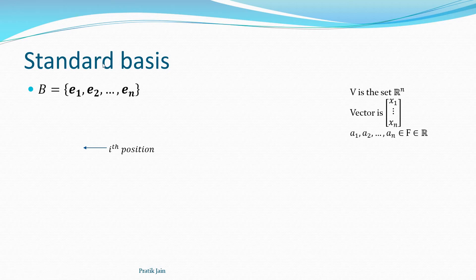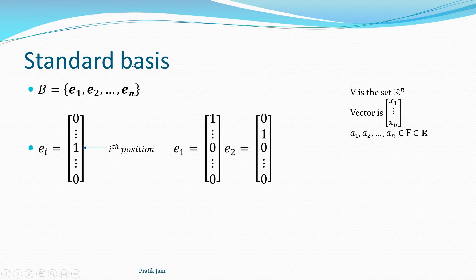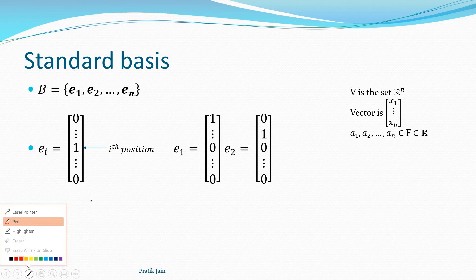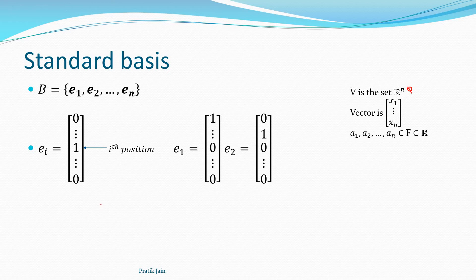Now there is something known as the standard basis — this is something we have learned since childhood. If you have vector space R^n, an n-tuple, and you have some basis e1, e2 up till en, the standard bases are defined by putting one on the i-th position. So e1 is (1, 0, 0, ...), e2 has one on the second position, and so on.